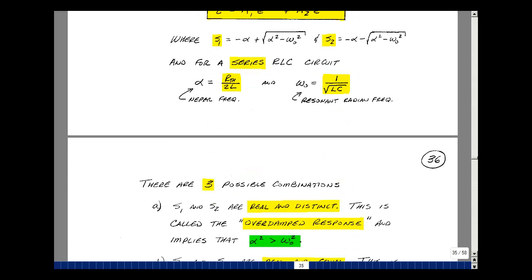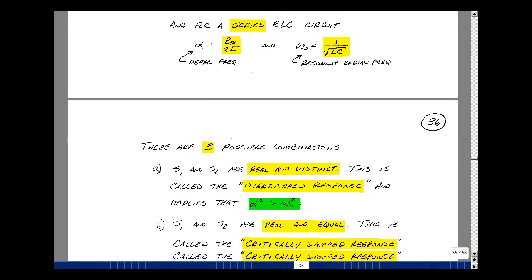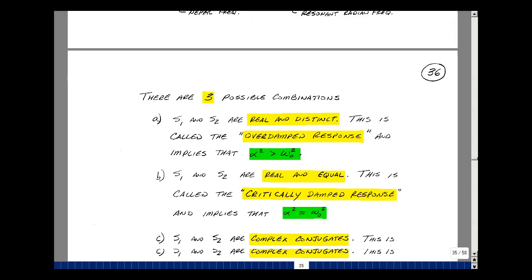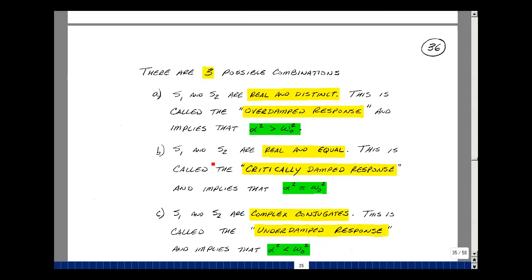Now there are three possibilities with S1 and S2. You have that this term is real. So we wind up getting two distinct roots that are real. This is called the over-damped response. And this would occur when alpha squared is greater than omega naught squared. Or really just alpha is greater than omega naught. We could have alpha equal omega naught. And again, we'd have two roots, S1 and S2. But they would actually be the same and be real. This is called the critically damped response.